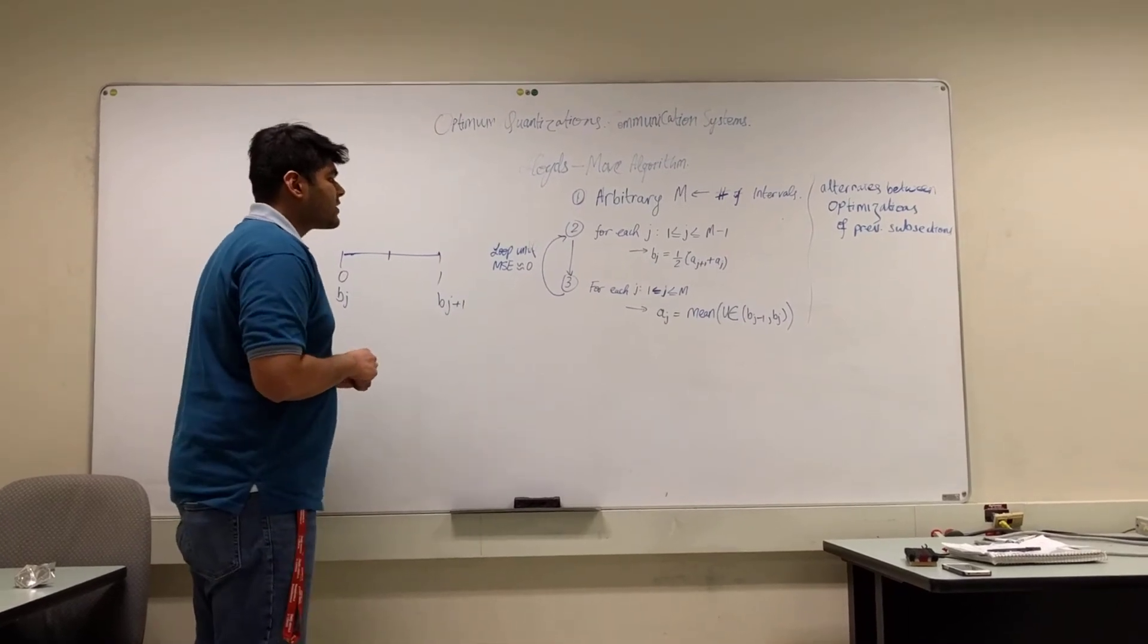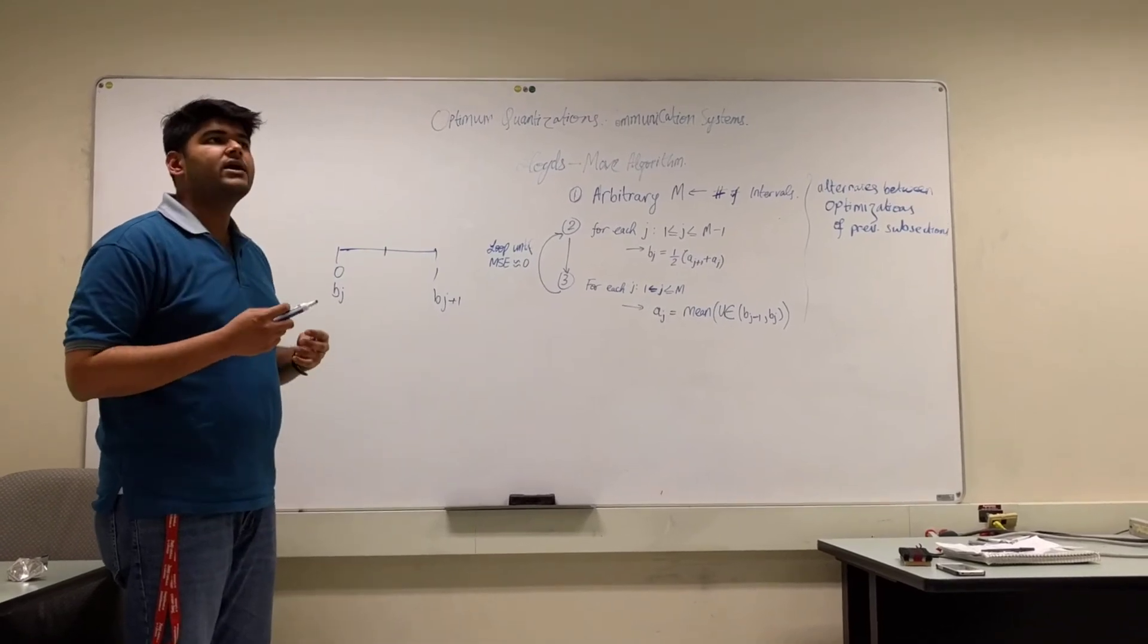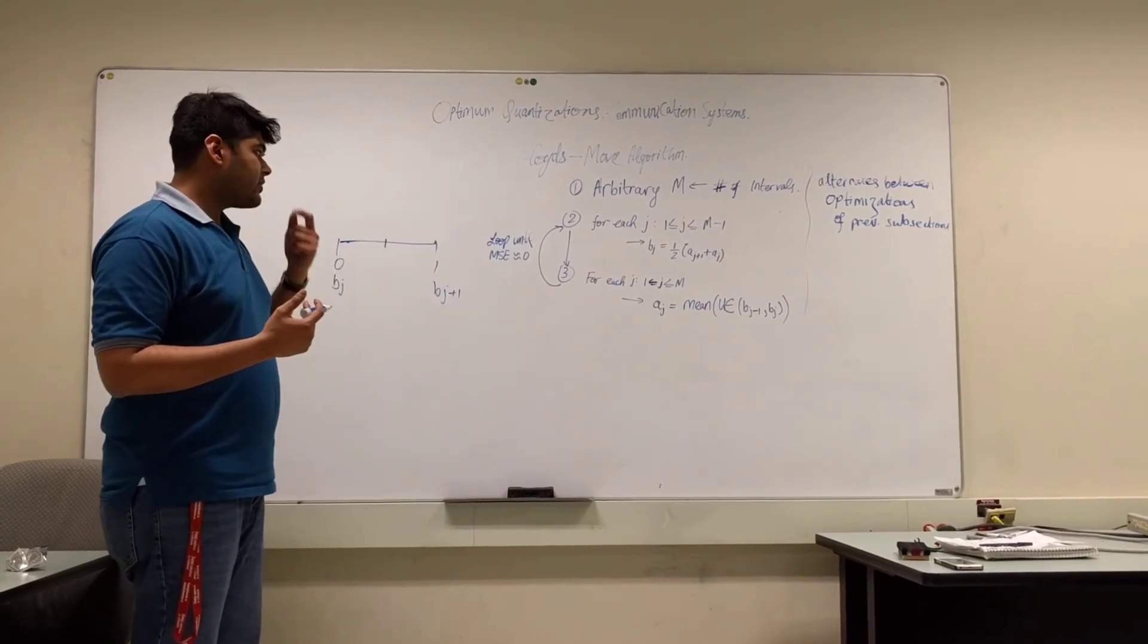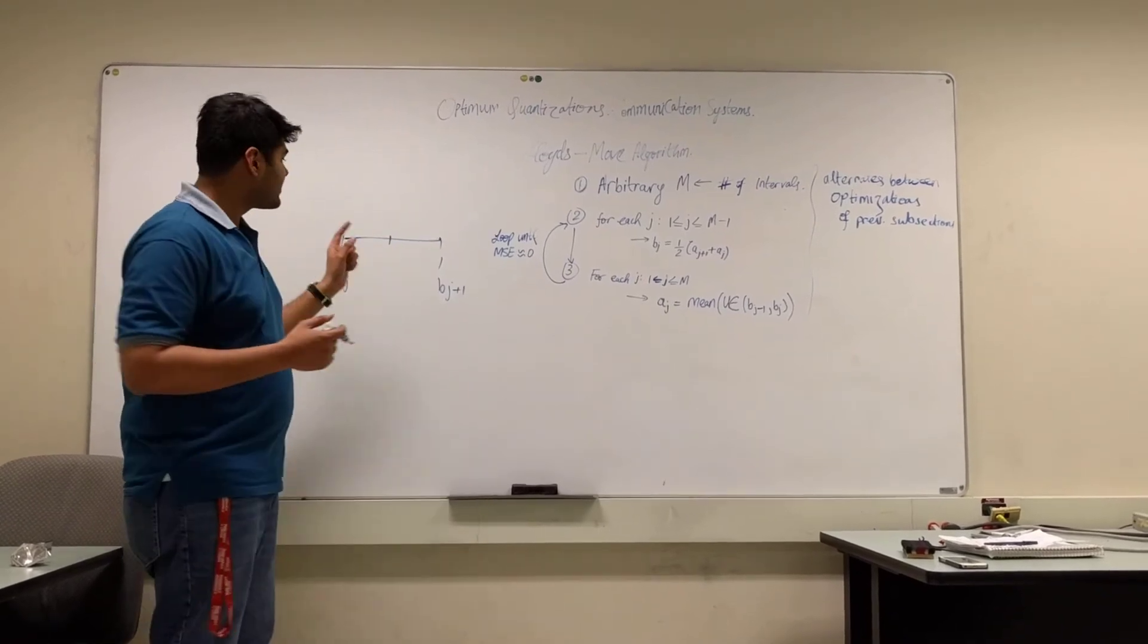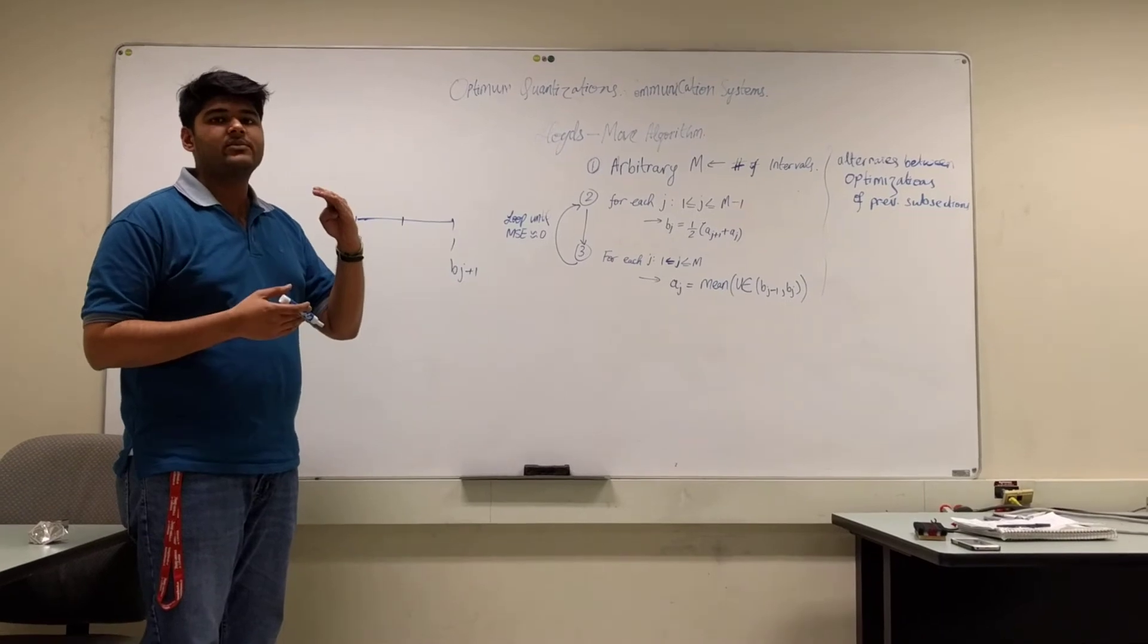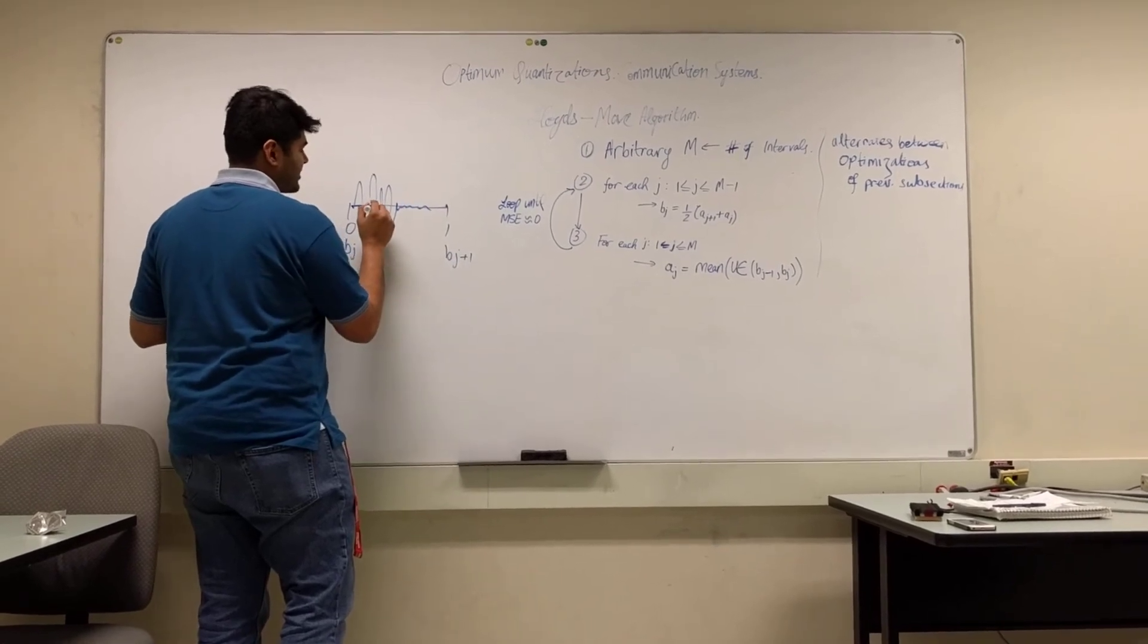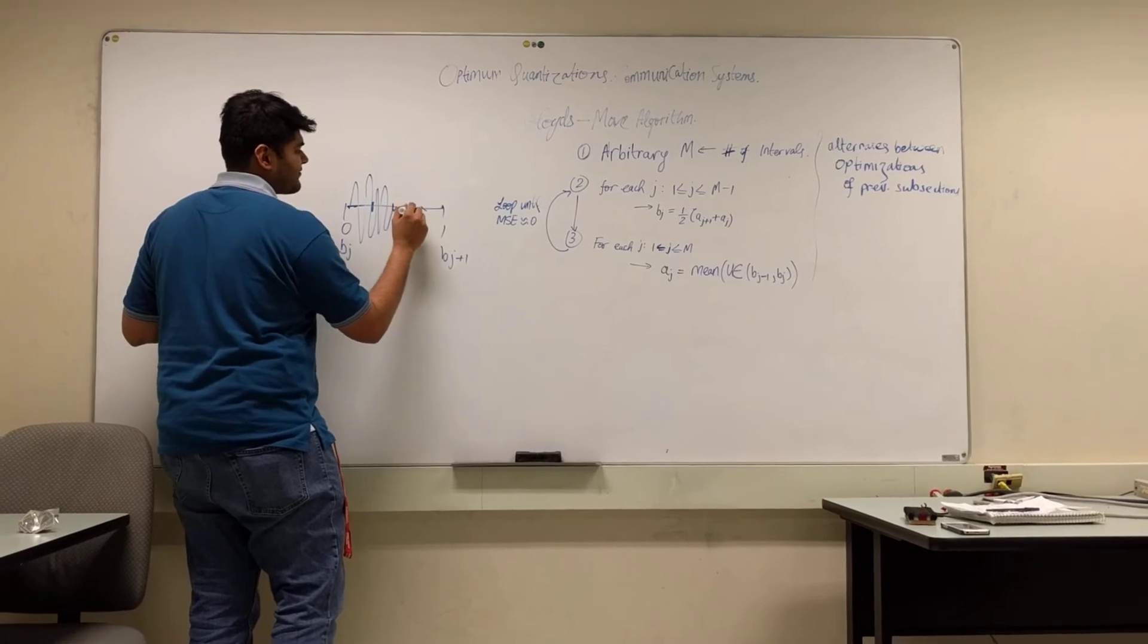The way it works is that you have a certain probability density function of where a signal is more populated, where it can provide you with more information. The most important representation point within that interval will be where your signal is most heavily populated. So for instance, if my signal is like that, and then like that, I would rather have my representation point somewhere over here than somewhere over here.